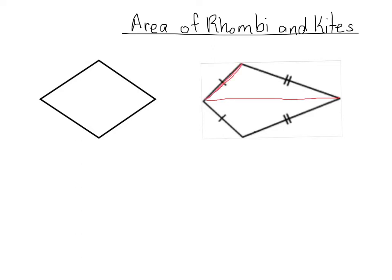We always try to cut our shapes into shapes that we're more familiar with. I outlined one of the triangles in red, and I'm going to go ahead and outline the other triangle in blue. So we've cut our shape into two congruent triangles — one in red, one in blue.